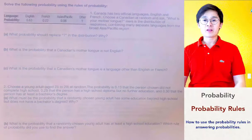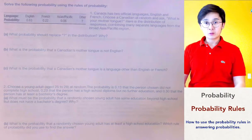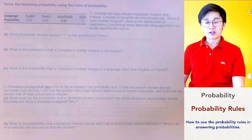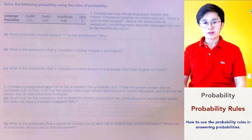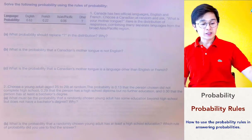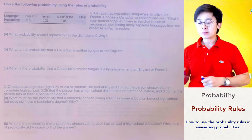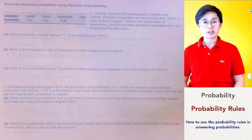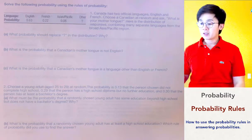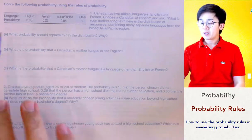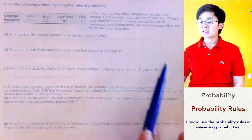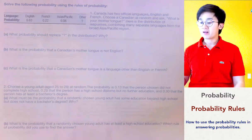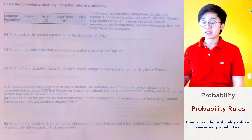Now we're going to use the probability rules in answering some probability questions for this worksheet. Let's go ahead and start problem number one. In problem number one, we are given a table of people asked about their first language in Canada.